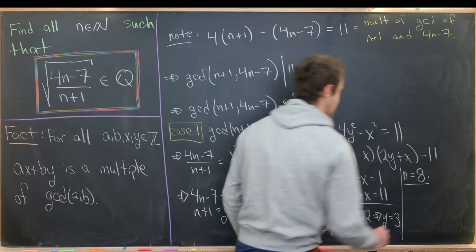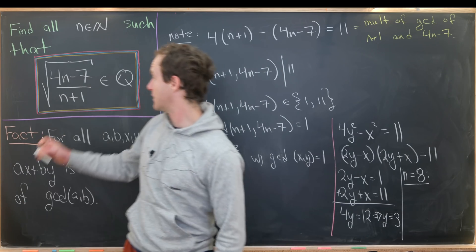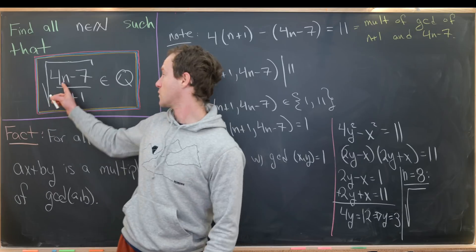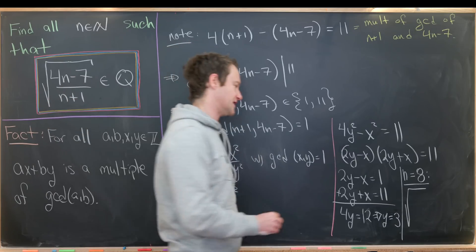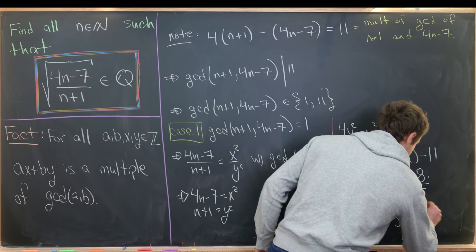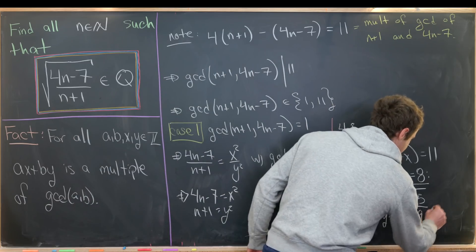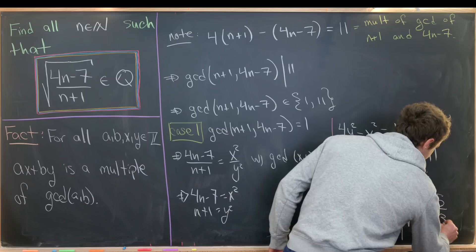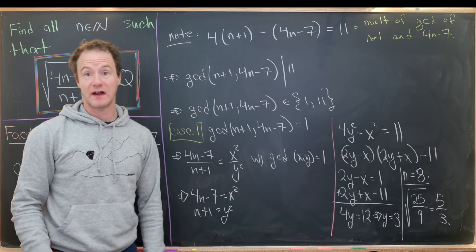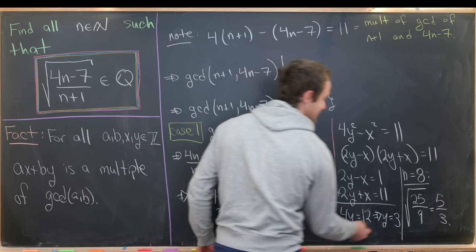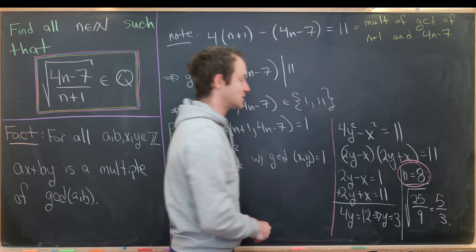But now if n = 8, let's see what this thing turns into. That'll be the square root of (4 times 8 is 32 minus 7 is 25) over (8 plus 1 is 9). But that's exactly 5/3. So in fact we got a rational number in this case, so n = 8 indeed is a solution to this problem.